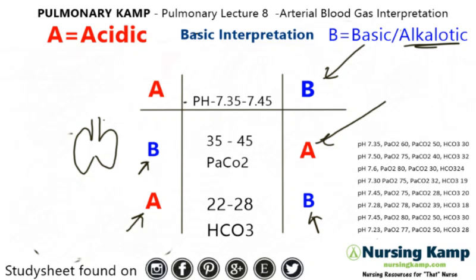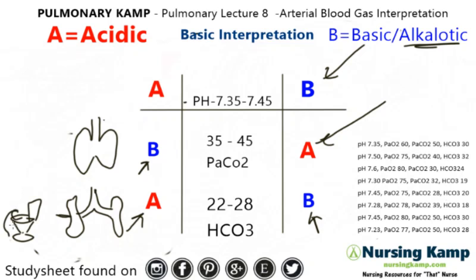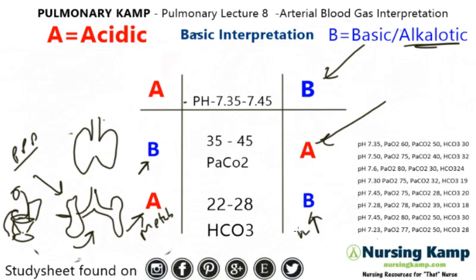The last column is also regulated by the kidneys. The kidneys regulate waste — so urine output. If there's a problem with the person urinating, puking, or pooping, it's going to affect this metabolic area. So that column is metabolic.